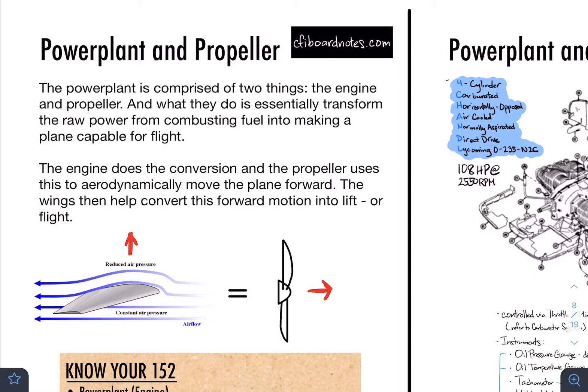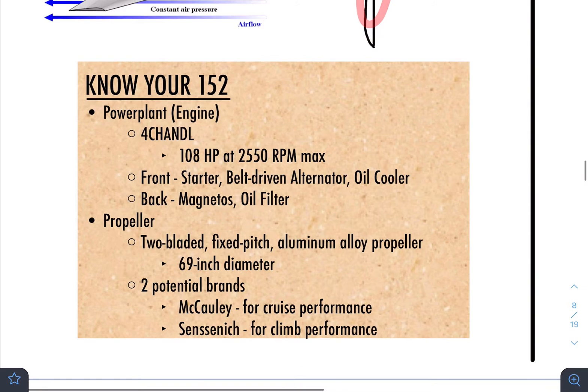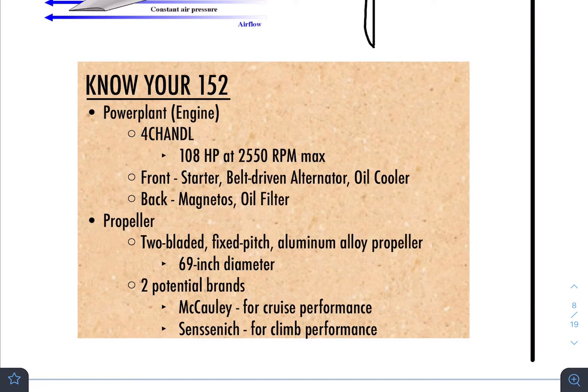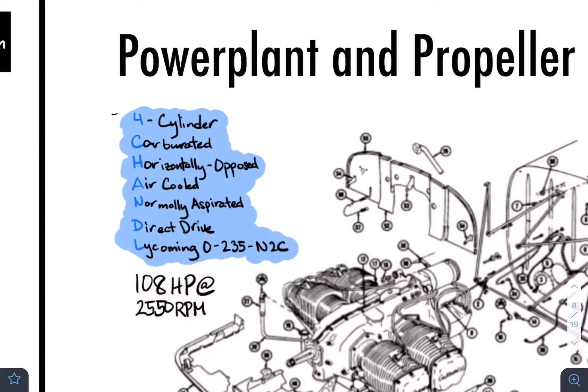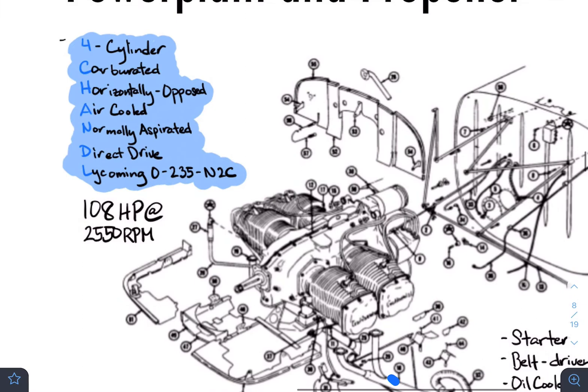The engine provides the necessary energy for your propeller to move. As far as knowing your 152, these are the things your DPE will need to hear from you when they ask about the power plant, the engine, and the propeller. The first thing — and one of the more important things — is this acronym: CHANDLE. These are the qualities of the engine.